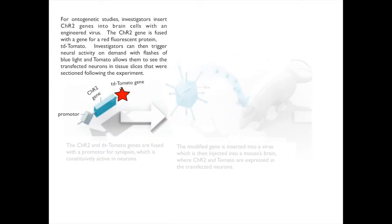For optogenetic studies, investigators insert channel rhodopsin 2 genes into brain cells with an engineered virus. The channel rhodopsin 2 gene is fused with a gene for a red fluorescent protein, TD tomato — I'll just hereafter refer to it as tomato.